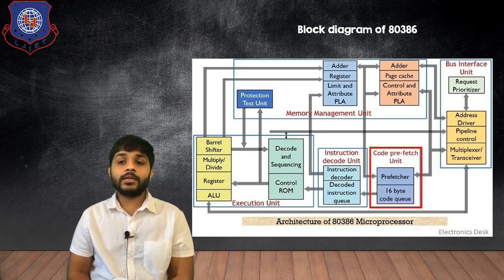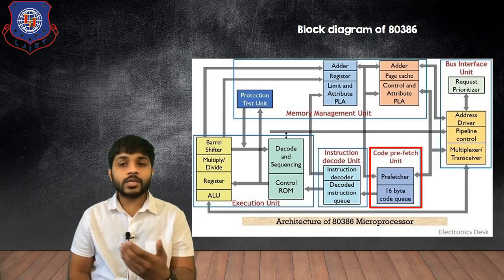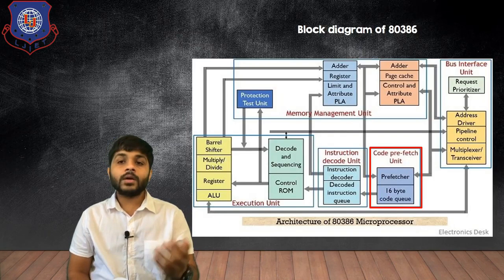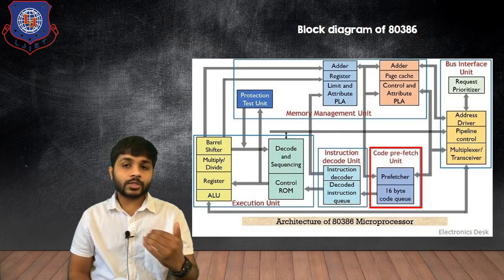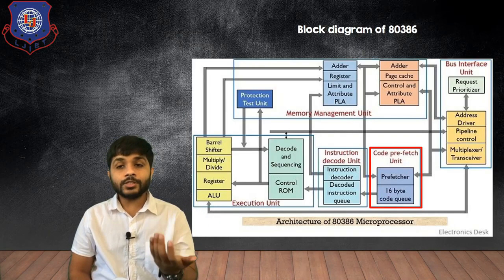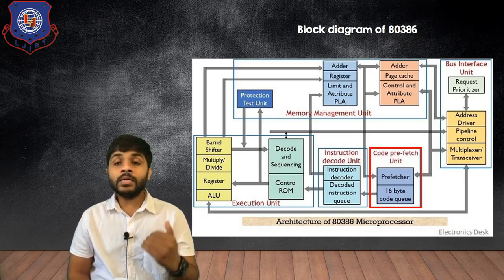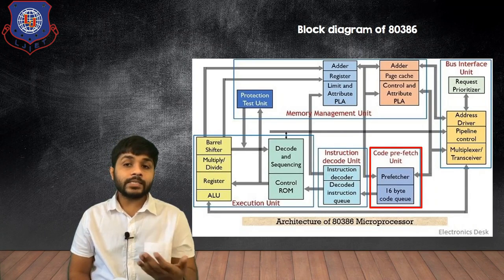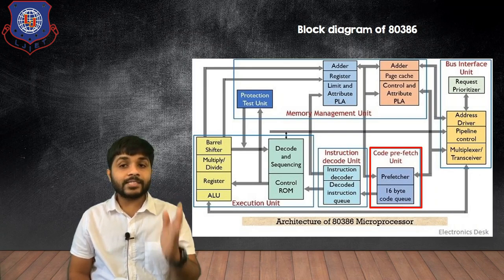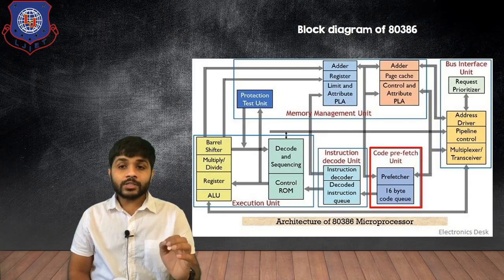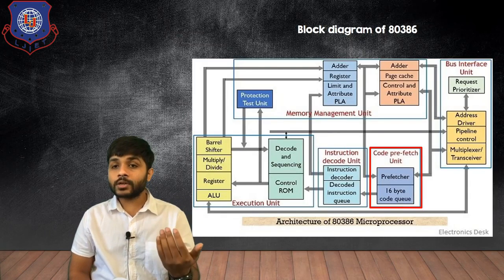The next block is the code prefetch unit. In this block the instructions are prefetched, so while one instruction is in execution the next instruction is stored in the code prefetch unit. In the code prefetch unit there is a prefetcher and the 16-byte code queue, which means while one instruction is in execution the next 16 instructions can be stored.